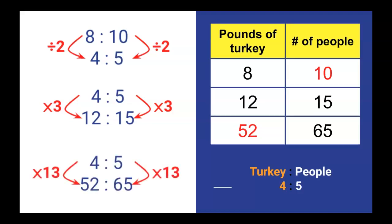And if you scale it up again, multiplying each side by 13, you get 52 pounds of turkey for 65 people. You can see that these are all equivalent ratios because they all reduce to 4 to 5. This is one key component of a proportional relationship.